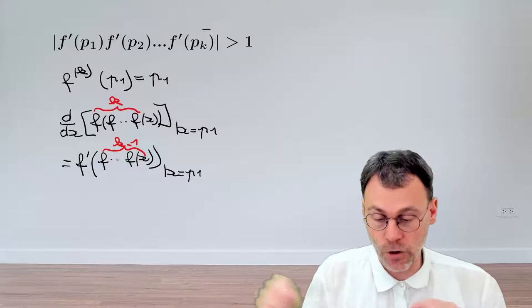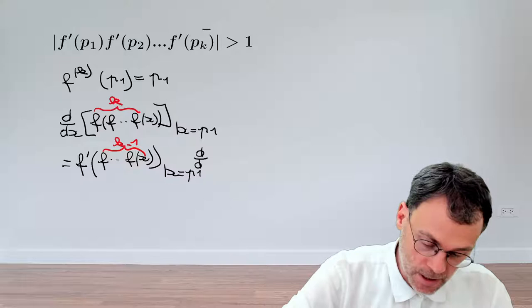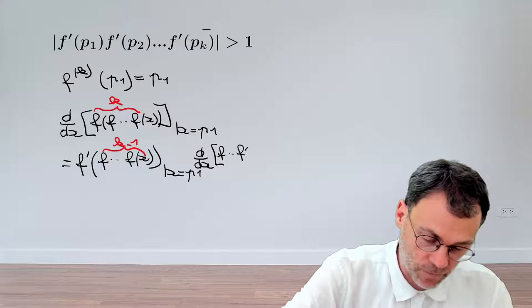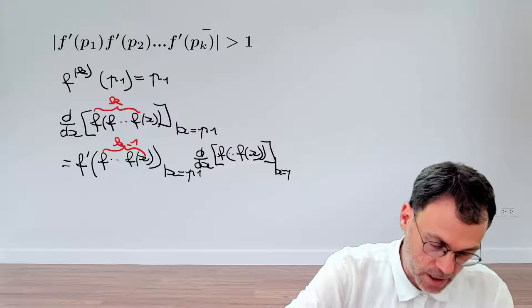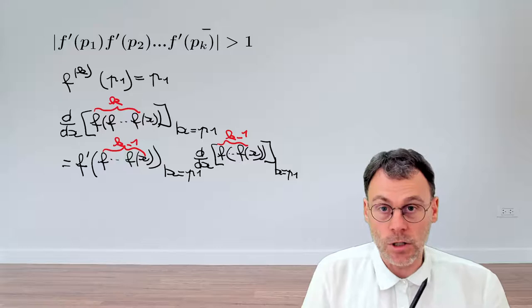So this is the first factor for our chain rule. For the second factor, we then need to take the derivative of the argument that we have here. This is going to be d/dx of the argument. And the argument is again going to be the function f applied k minus 1 times, evaluated at the point p1. So here, how many times do we apply f? We apply f k minus 1 times.